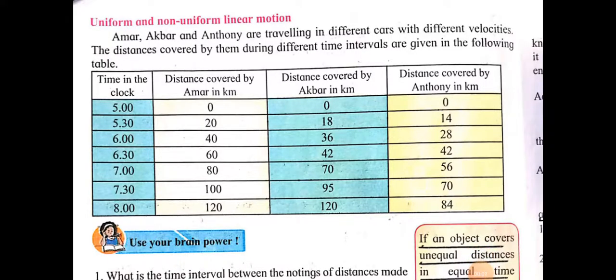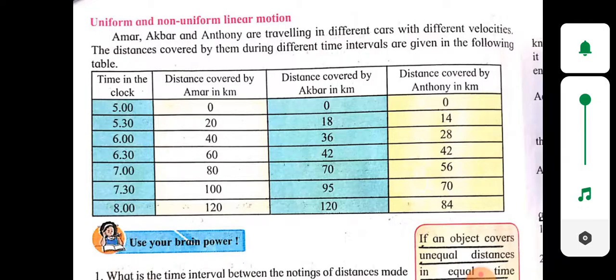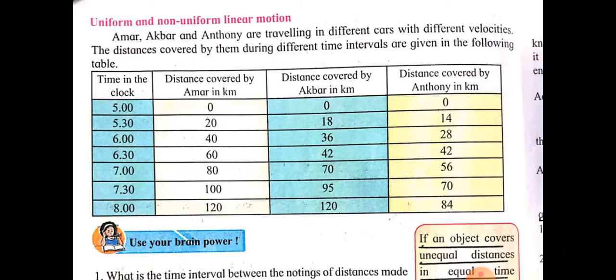Uniform and non-uniform linear motion from topic 1st laws of motion. Students, what is uniform and non-uniform linear motion? We have studied about the motion of an object. We know what is motion of an object. When an object changes its position with respect to its surroundings, then such object is said to be in motion.